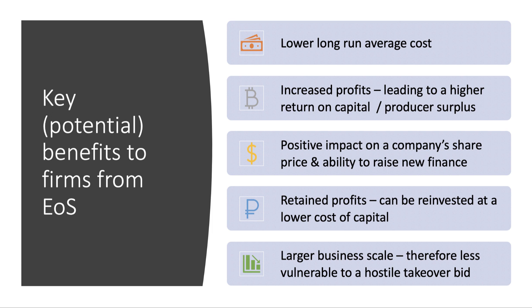What are the key potential benefits for businesses from scale economies? One is that the average cost of production goes down in the long run, which leads to increased profits, higher returns on capital, and rising producer surplus. Economies of scale, through higher profits, can have a positive impact on the company's share price and therefore the ability to raise finance. Those extra profits can be retained and reinvested at a lower cost of capital than taking out a bank loan.